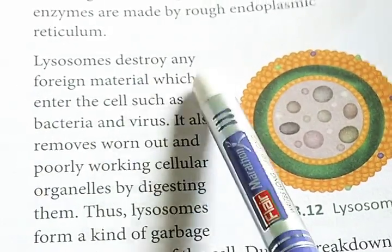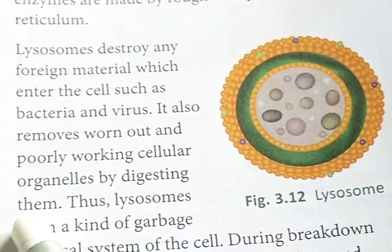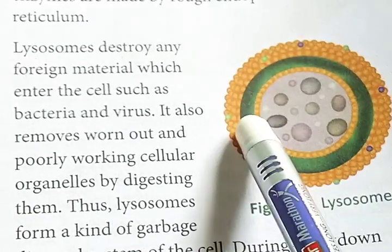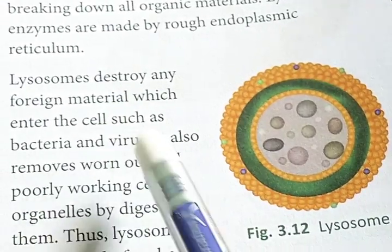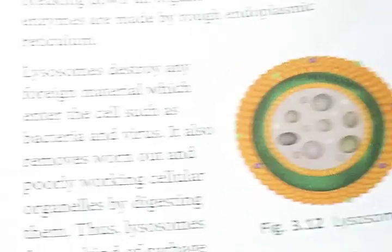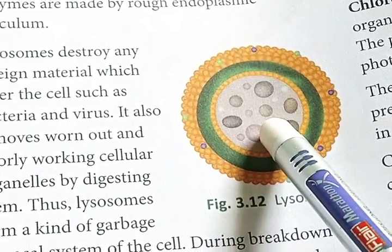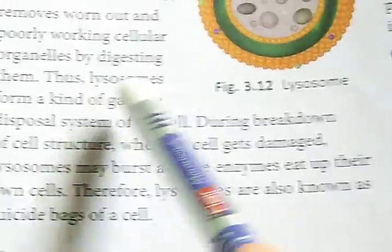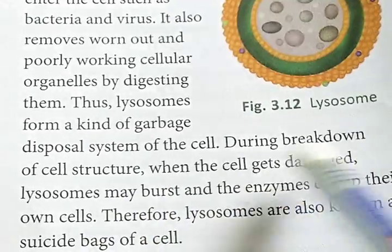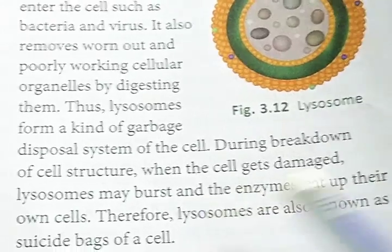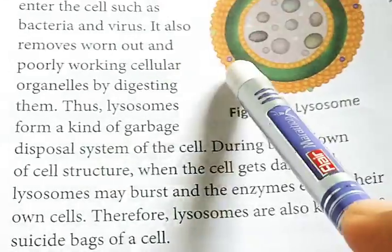Lysosome destroys any foreign materials which enter the cell, such as bacteria and viruses. It also removes worn-out and poorly working cellular organelles by digesting them. Thus, lysosome forms a kind of garbage disposal system. During breaking down of cell structure, when the cell gets damaged, the lysosome may burst and its enzymes eat up their own cell. Therefore, lysosomes are also known as the suicidal bag of the cell.